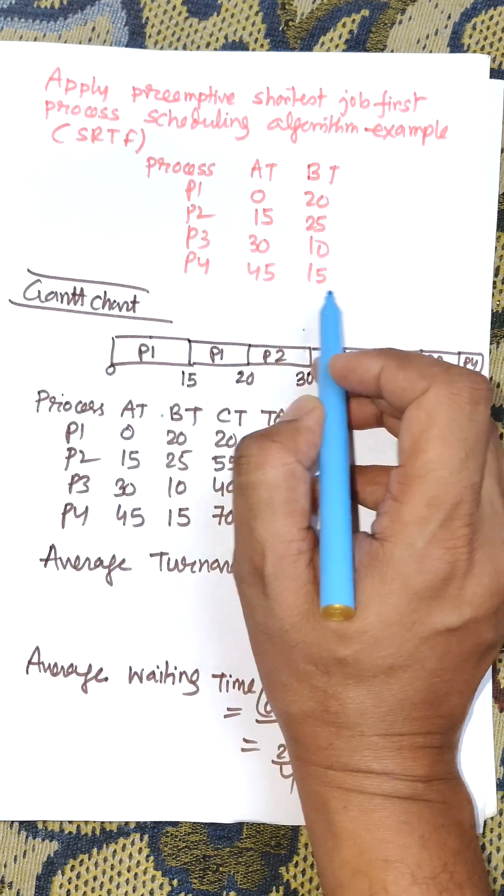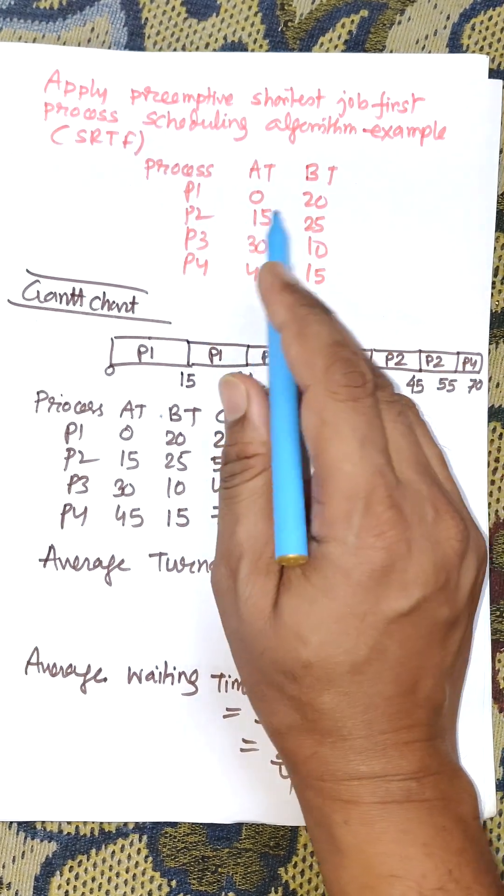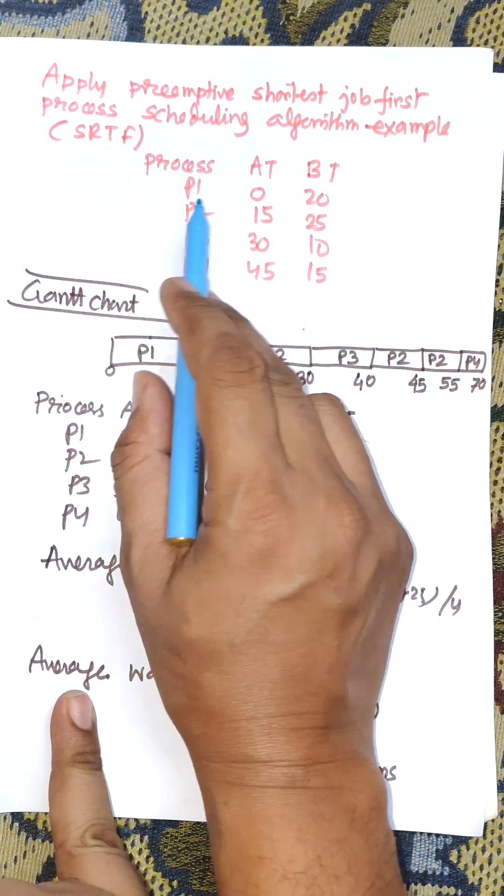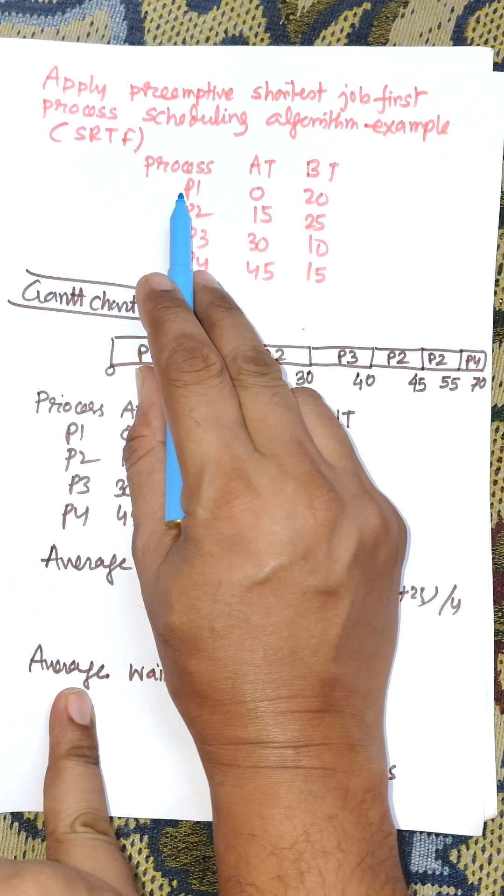We need to calculate average waiting time and average turnaround time for the given problem. First of all, we need to draw the Gantt chart. Gantt chart is based on arrival time.